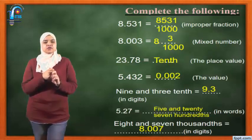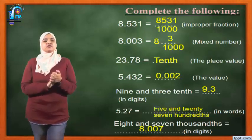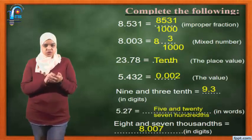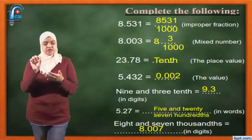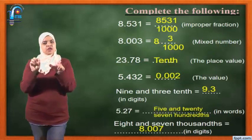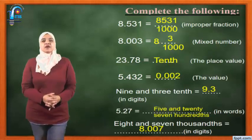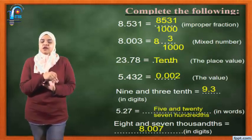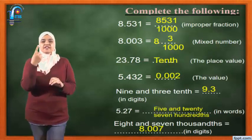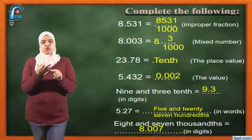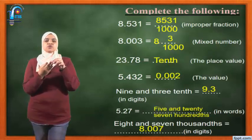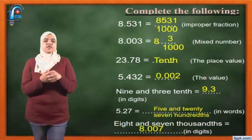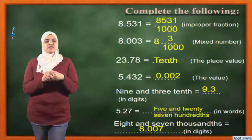8 and 7 thousandths — how to convert it into digits? I cross 'and' and put instead a decimal point. So before the decimal point: 8. I write 8. Then 7 thousandths. Thousandths means there must be three digits. Is 7 three digits? Of course not. So I put 0, 0, then 7. The answer will be 8.007.